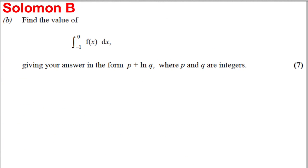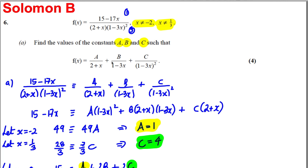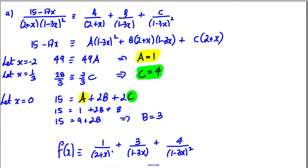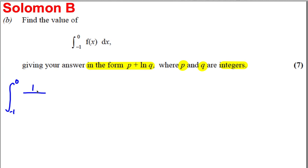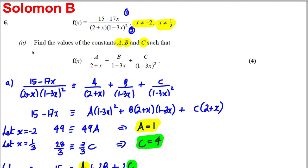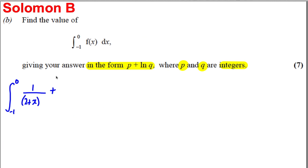For Part B, we need to find the value of the definite integral of f(x) dx, giving the answer in the form p + ln(q) where p and q are integers. Instead of integrating the original complicated expression, we integrate the partial fractions: the integral from −1 to 0 of [1/(2 + x) + 3/(1 − 3x) + 4/(1 − 3x)²] dx.